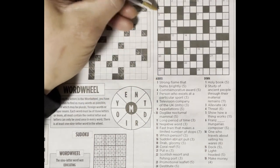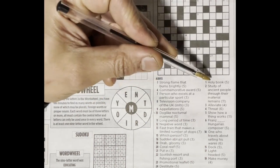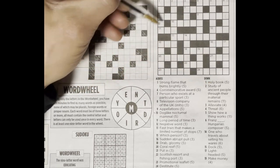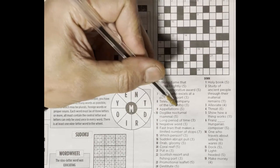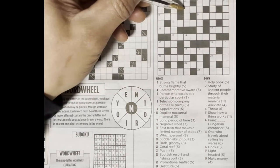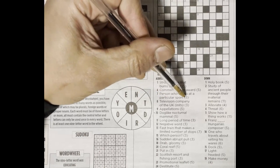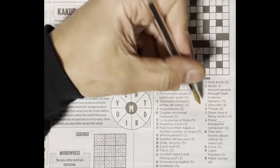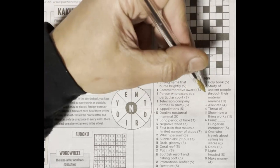Holy book, one down - could be Bible, Quran, could be Torah, so leave it. Eight across, television company of the UK - this could be BBC, could be ITV. Seven across, person who excels at a particular sport, probably ace. Three down, alleviate, ease.